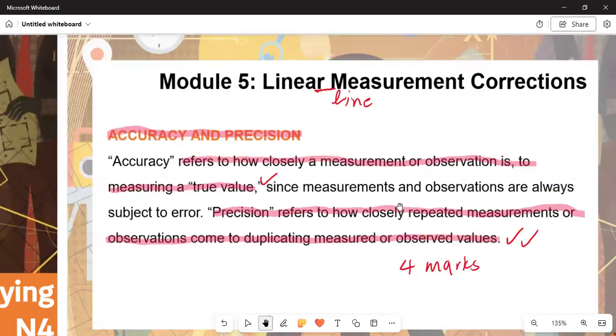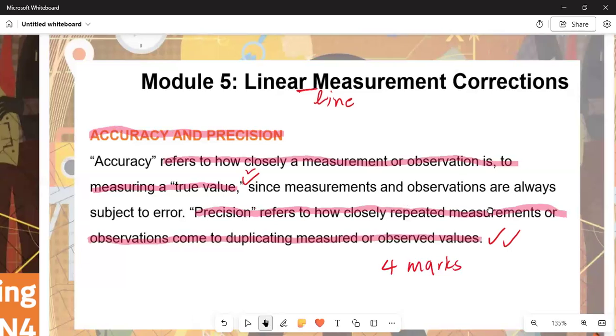We are now in Module 5. Modules 1 through 4 have already been covered. We'll discuss accuracy and precision. The key concept to understand is that when we want the true value, measurements are subject to error. Precision refers to how closely repeated measurements or observed values can be duplicated. That is worth four marks.